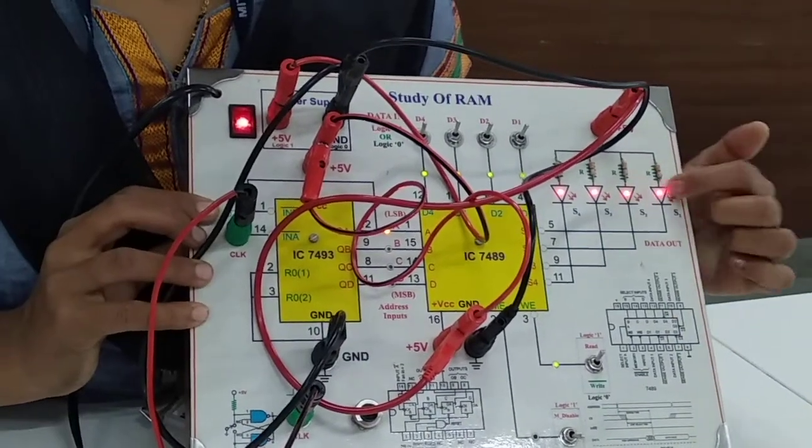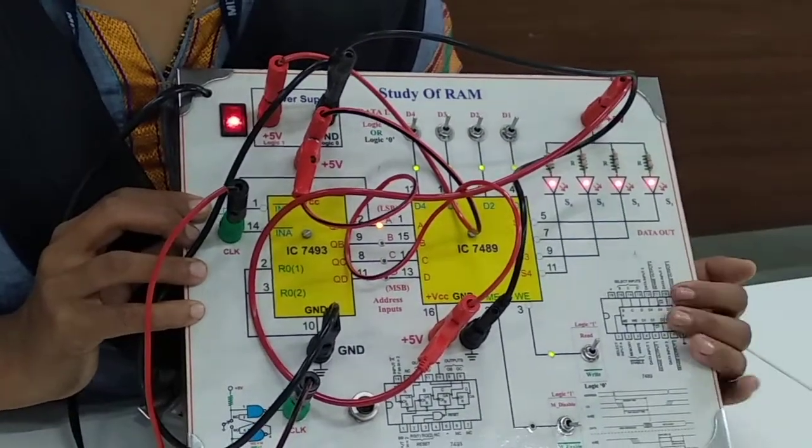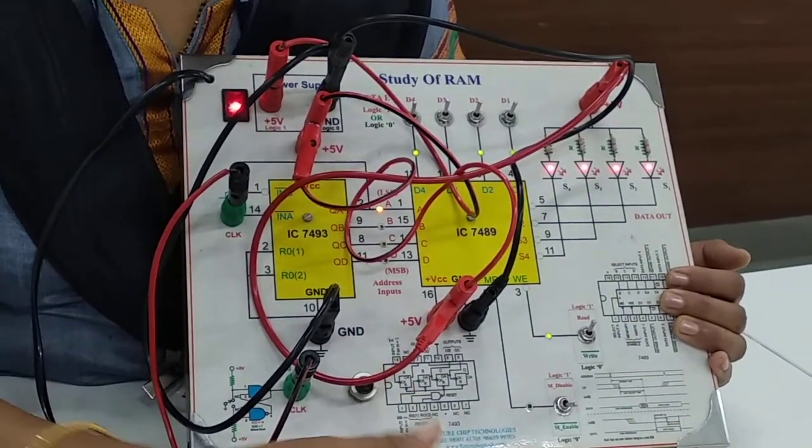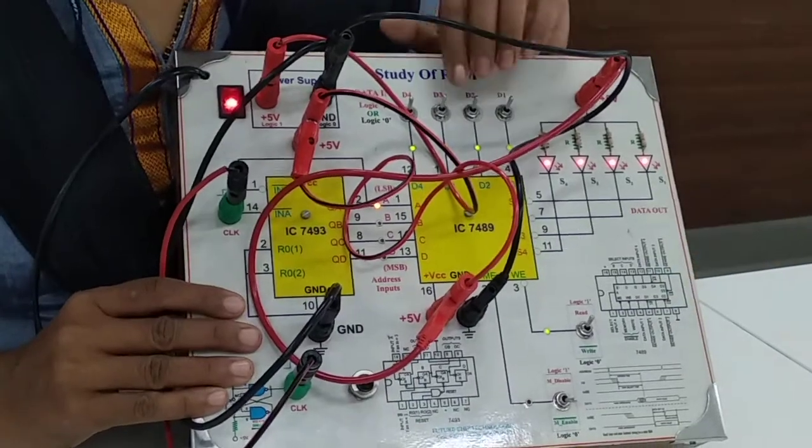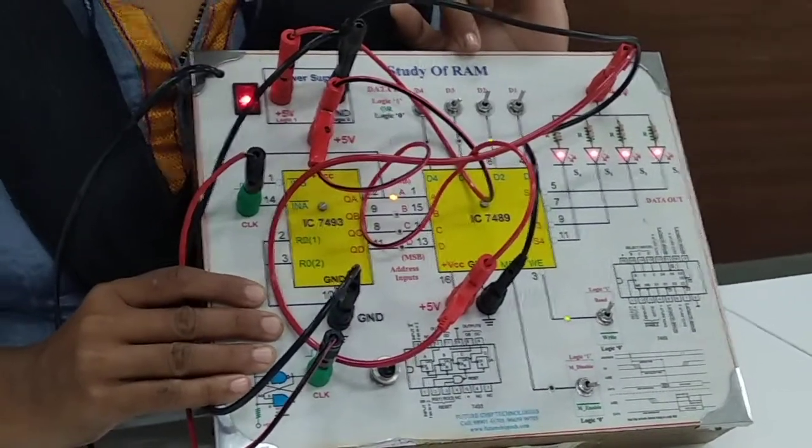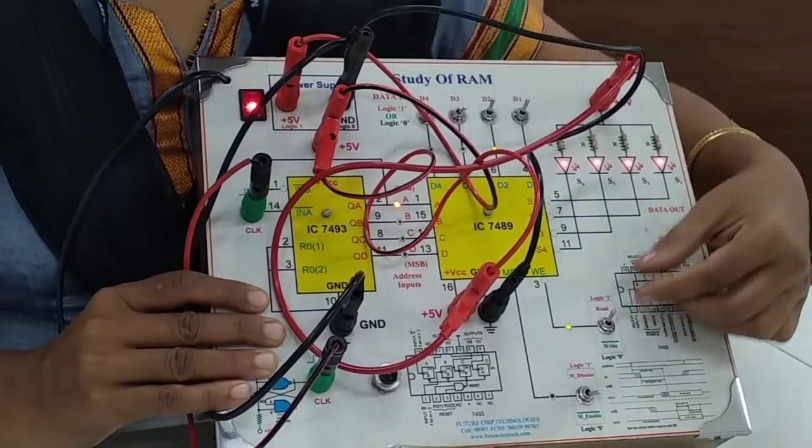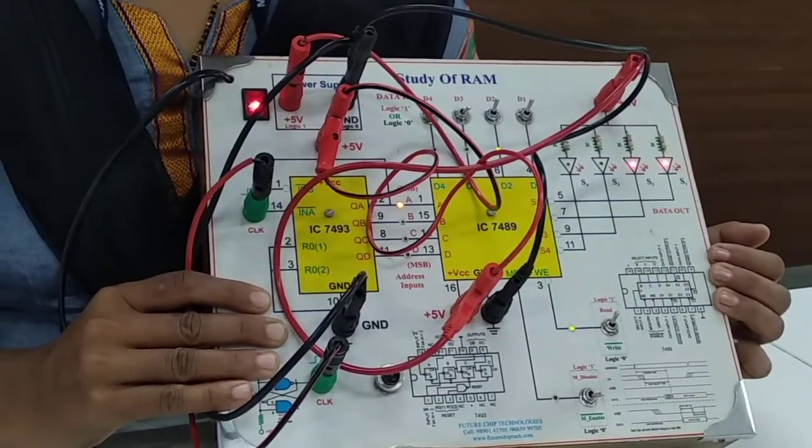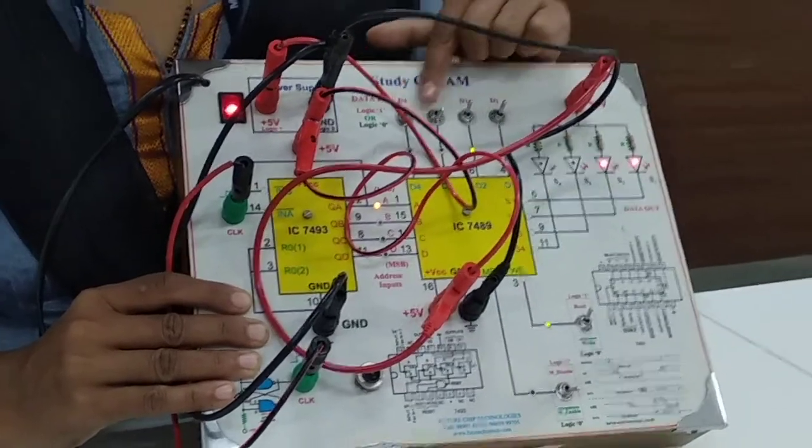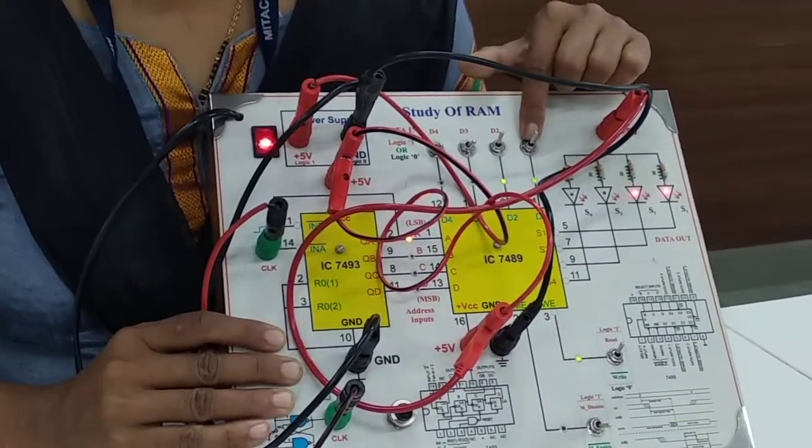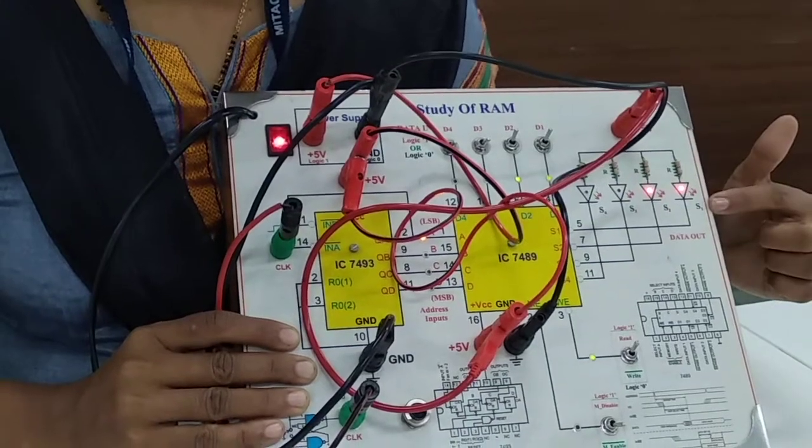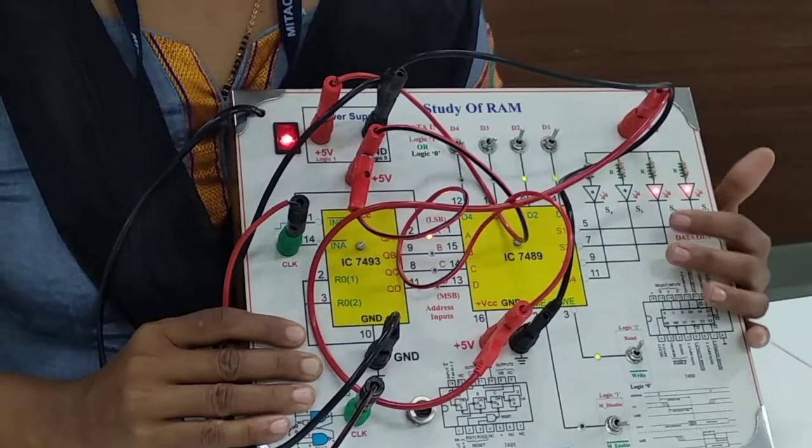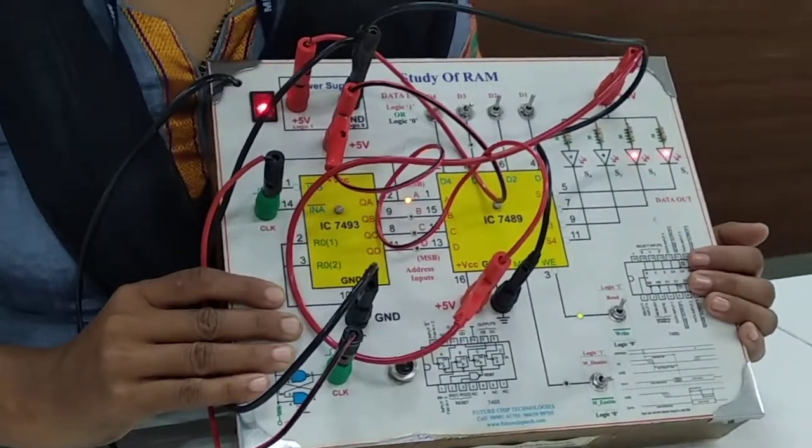Then set the next address, you can see the outputs are already there. To load the next, load the next address into the memory. Then load your input or give your inputs. And give low to high pulse for your memory. You can see you have loaded 0011 as your input. You can observe the same as your output. This is the operation for loading input into the memory.